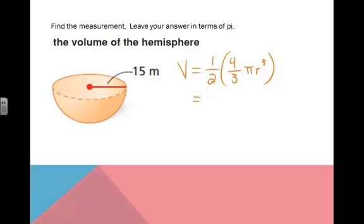Now I'm going to plug everything in. We have 2/3 times π times 15³. 15³ is 3,375. And I'm going to divide that by 3 and then multiply it by 2. So then we get an answer of 2,250π cubic meters. That would be the volume of the hemisphere.